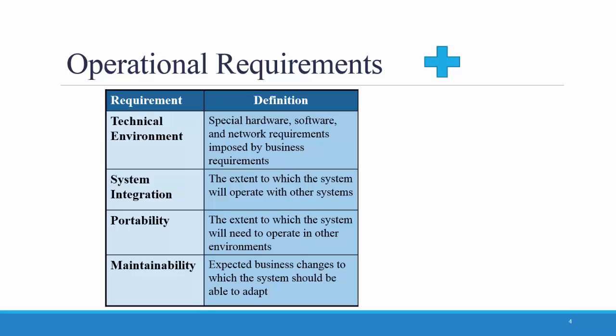An example of this type of requirement might be: All office locations have always-on network connection, permitting a real-time database update. The second type of operational requirement is system integration, which involves the extent to which the system will operate with other systems. An example might be: The system will read and write to the main inventory database. The third is portability, which involves the extent to which the system will need to operate in other environments. An example could be that a system must operate with mobile devices, both Android and iOS.